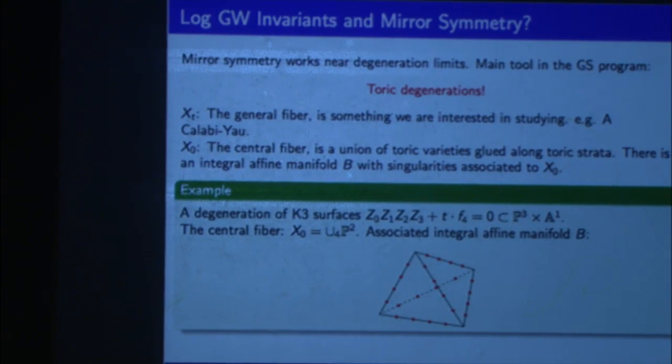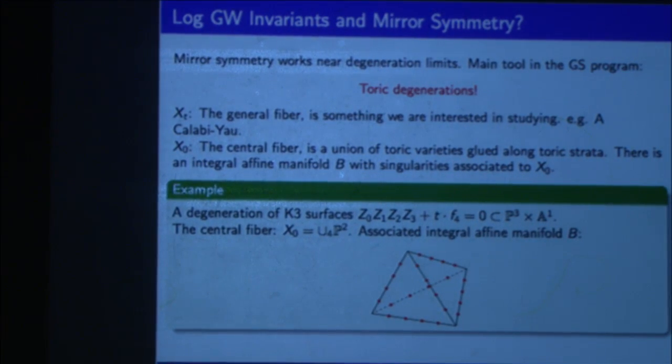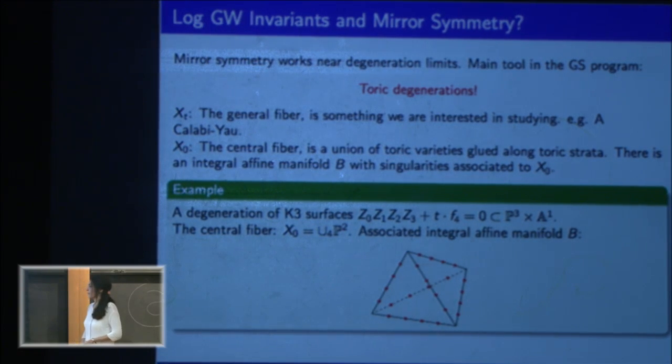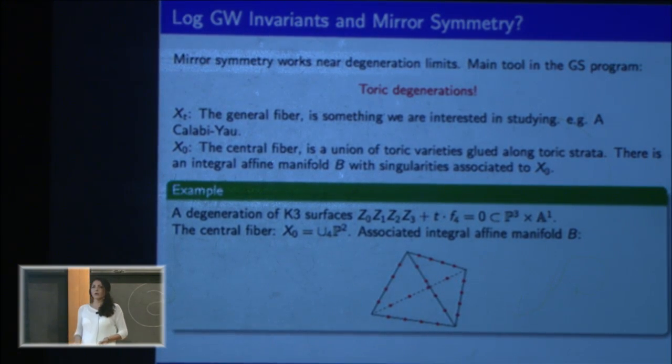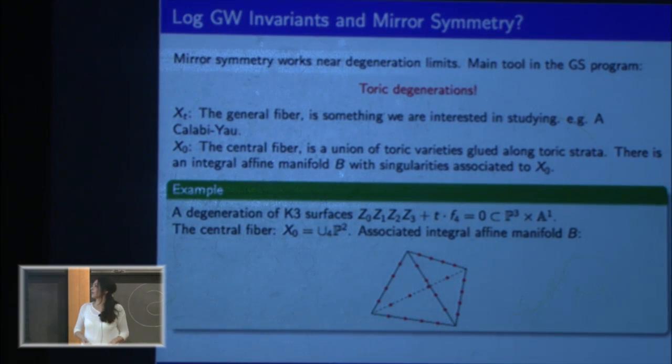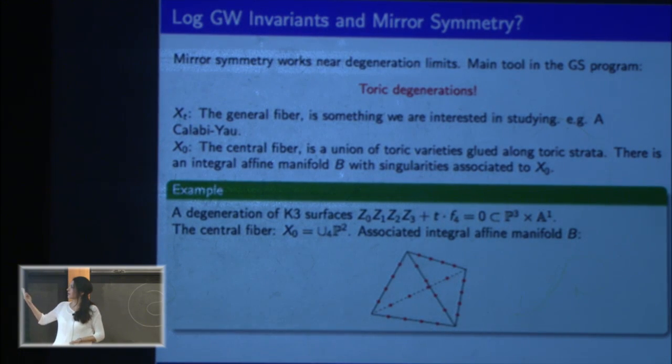And how do log Gromov-Witten invariants appear in mirror symmetry? The construction of mirror suggested by Gross and Siebert is that whenever you have something, say Calabi-Yau, you put it into a degeneration, and they're considering special degeneration called toric degeneration, and the aim is to construct a mirror degeneration family. A toric degeneration is this: it's a degeneration. The general fiber is the thing you're interested in studying, say the Calabi-Yau you want to construct its mirror, and the central fiber is a union of toric varieties glued along toric strata.